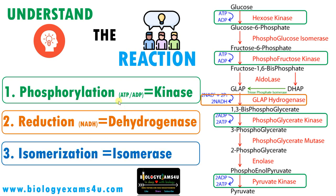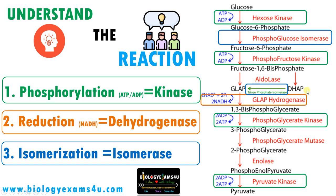Point number three: when there is an isomerization reaction, the enzyme is isomerase. In the second step, glucose 6-phosphate becomes fructose 6-phosphate — glucose and fructose are isomers, therefore the enzyme is isomerase: phosphoglucoisomerase, adding the substrate name. Then, dihydroxyacetone phosphate becomes glyceraldehyde 3-phosphate — both are 3-carbon compounds and are isomers, therefore the enzyme is isomerase, called triose phosphate isomerase, as both compounds are 3-carbon compounds, hence called triose.